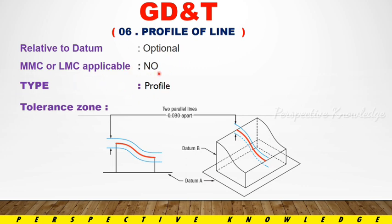This type is called the Profile Tolerance Type. This is the tolerance zone. This is the lower specification limit. This is the upper specification limit. If we measure the line, there are two limits. The upper distance is 0.03.